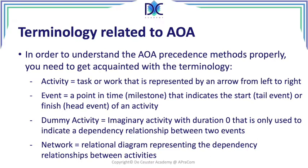First of all, what is an activity? An activity is a task or work that is represented by an arrow from left to right. We always draw the diagram from left to right. The length of the arrow is not relevant to or related to the duration of the activity. It just indicates this is an activity from point A to point B, with a duration of so many days or weeks.